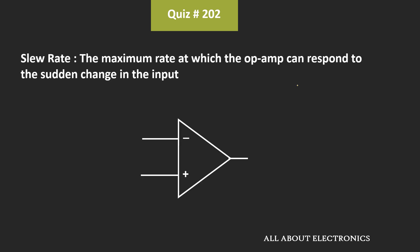For the op-amp, the slew rate defines the maximum rate at which the op-amp can respond to a sudden change in the input. We have been given that the slew rate of the op-amp is equal to 2V per microsecond.